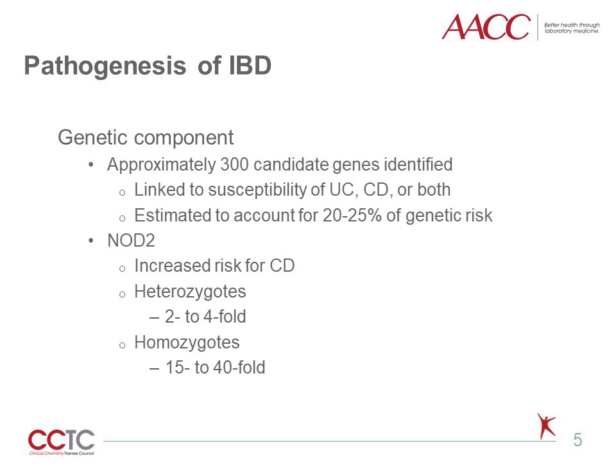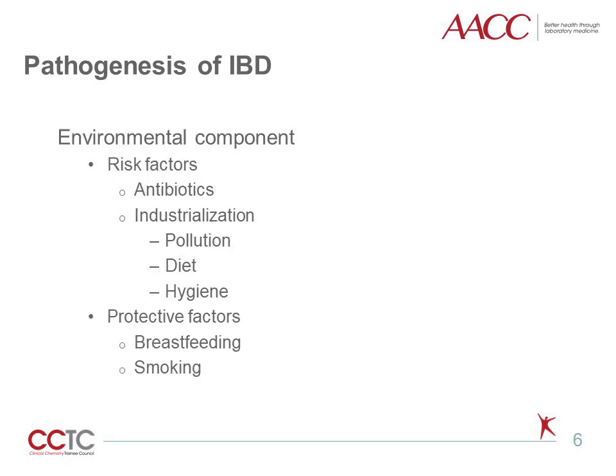Similarly, 20-30% of patients with Crohn's disease do not have known NOD2 mutations. This same complexity is evident in environmental exposures associated with IBD. Various studies have demonstrated a link between antibiotic use in children and risk for IBD, attributed to changes in the GI microbiome. Industrialization has also been linked to IBD, although the exact exposures—which could include pollution, changes in diet, and improved sanitation—are still debated. In contrast, breastfed infants tend to have lower prevalence of IBD compared to formula-fed infants. Smoking as an adult, current or past, has consistently been shown to have a protective effect against IBD, although the mechanism is not clear.